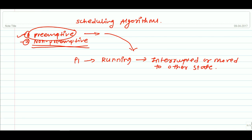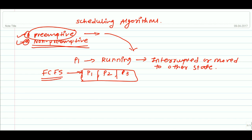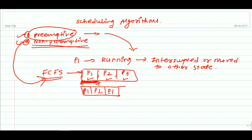These are the two major concepts related to scheduling algorithms — preemptive and non-preemptive. For example, in First Come First Served, suppose there are three processes P1, P2, and P3. If we execute them sequentially — first P1, then P2, then P3 — and during execution of P1 we do not interrupt it, that is non-preemptive. In preemptive, during execution of P1 we can stop it, execute P2, and then resume P1 again.